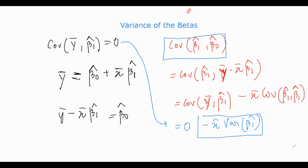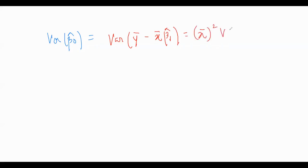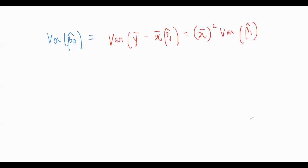Now let's understand the variance of β̂₀. Variance of β̂₀ is equal to variance of (ȳ minus x̄·β̂₁), which is equal to x̄² times variance of β̂₁. So we have made a connection: variance of β̂₀ and covariance of β̂₀ and β̂₁ are both expressed in terms of variance of β̂₁. Therefore, we only need to find variance of β̂₁.